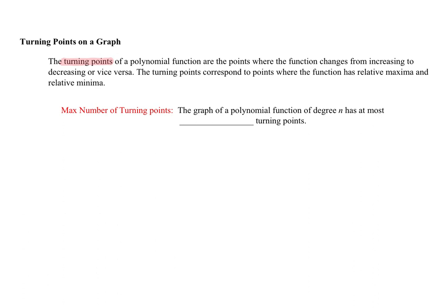Before we talk about the maximum number of turning points, let's draw a couple of graphs. If we draw a polynomial function that has one maximum and one minimum, this has a local maximum — also called a relative maximum — and a local minimum or relative minimum. These are both points where the graph changes from increasing to decreasing or vice versa. This is a good example of a graph that has two turning points (TP).